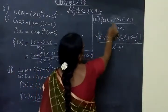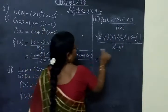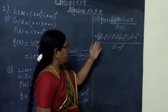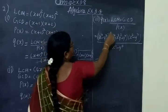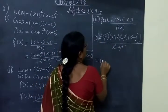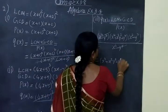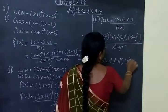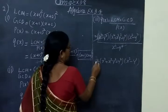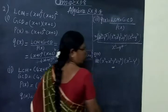Q of X equals LCM times GCD divided by P of X. You cancel out X power 4 minus Y power 4, since this is given in the question. After canceling, Q of X equals X power 4 minus Y power 4. So Q of X equals this answer.